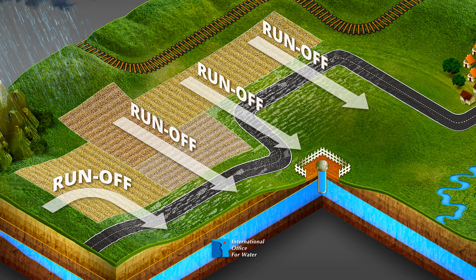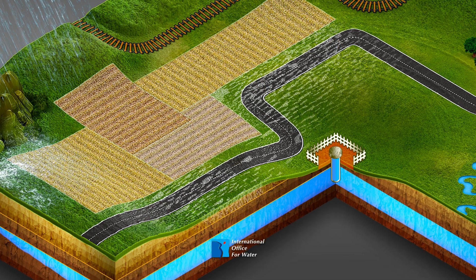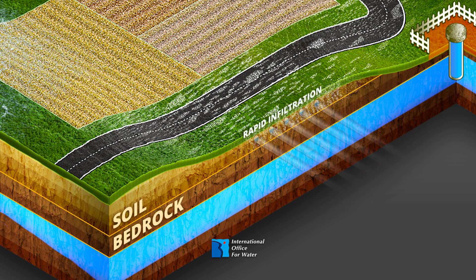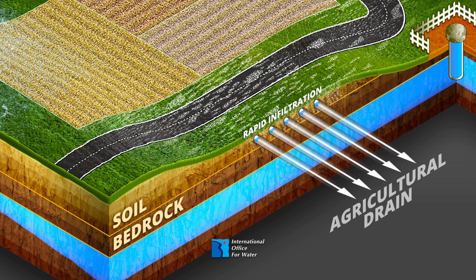Heavy rain also takes these substances through the actual soil in a process known as rapid infiltration. If the parcel is drained, the water and accompanying pollution is absorbed and directed into a ditch where the fertilizers and pesticides collect and concentrate.